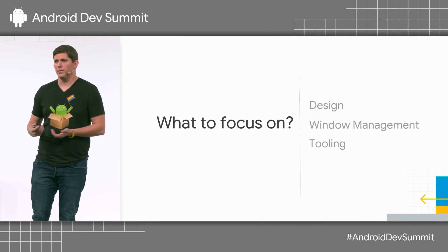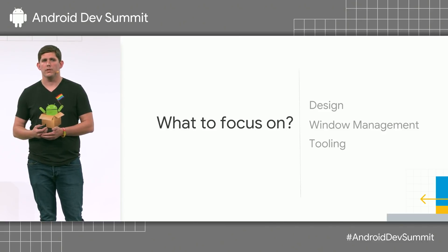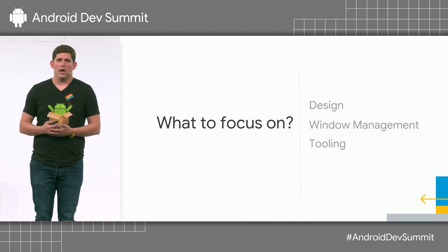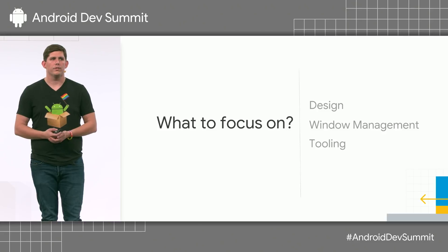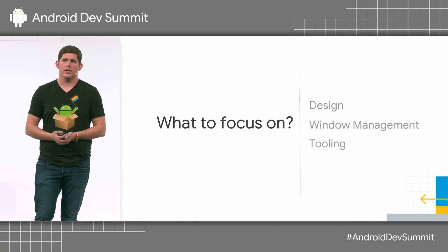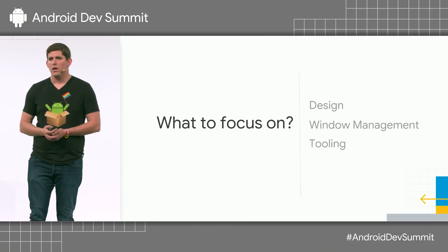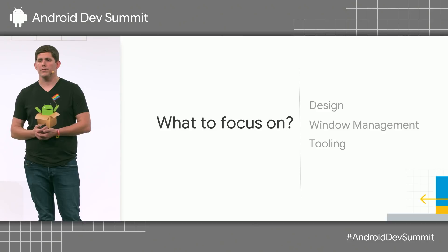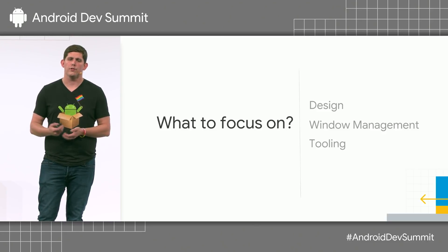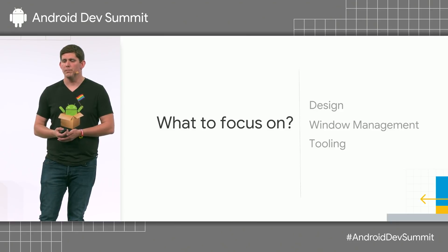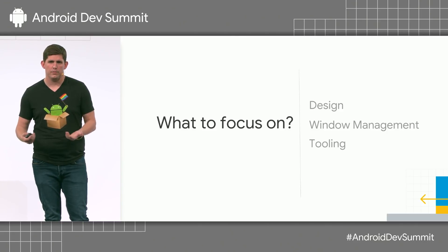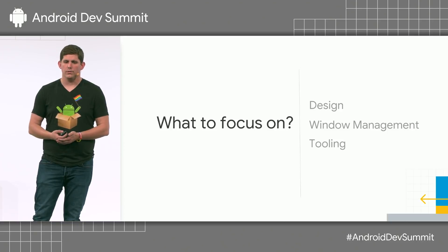So what's the focus when thinking about how to bring your apps to all these platforms and have a good user experience? Number one is design. If you've been focusing on phones, most of your designs are probably very portrait-based and smaller-screen-based. Window management is probably the biggest place where we see issues with partners' apps — dealing with resizing, multi-window, things that are just problems we've never had to focus on before. We'll also talk about the tooling available from Google to develop for these platforms.